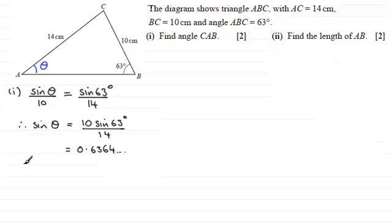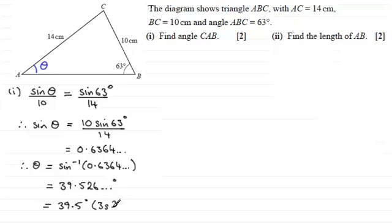To get theta, take the inverse sine of both sides, so theta equals the inverse sine of 0.6364 and so on. You'll end up with 39.526 and so on degrees, and if we round to three significant figures it's 39.5 degrees.